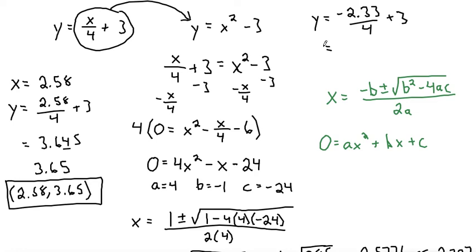If we take our negative 2.33 divided by 4 and add 3, that's positive 2.4175. Rounding to the nearest hundredth is 2.42. So the second solution would be negative 2.33 comma positive 2.42.